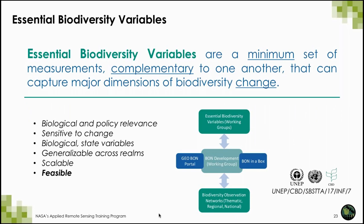The other important element of GEO BON are the Essential Biodiversity Variables, or EBVs. EBVs are modeled after the essential climate variables that guide the global climate observing system. They have been developed to derive biodiversity indicators for the Aichi Biodiversity Targets and represent a minimum set of complementary measurements that capture major dimensions of biodiversity change. They must be biologically and policy-relevant, sensitive to change, characterize biological state variables, generalizable across space, and scalable and feasible.